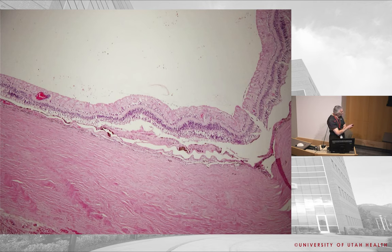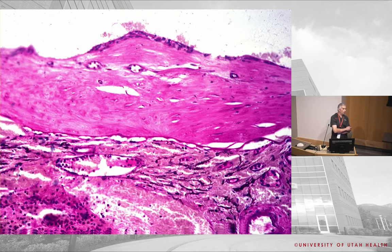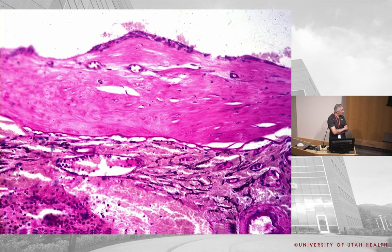Close-up shows focal neovascularization with fibrosis — subretinal fibrosis with disrupted RPE and tiny vessels. When extensive, this is called a disciform scar: a dense, thick fibrotic scar underlying the retina. This is the end stage of neovascular (wet) age-related macular degeneration.